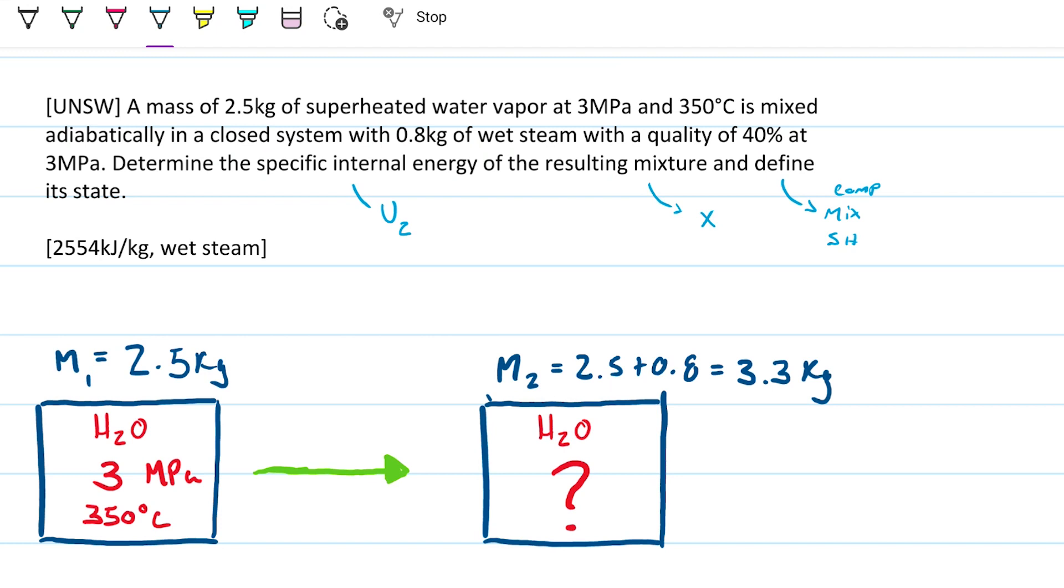So why is this different? Well, here's the catch, right? We start with superheated, that's alright, it gives that much information, but we're adding to the system another stream of water, right? So we start at this first state here, and we have all the properties, and that's nice, just as per usual.